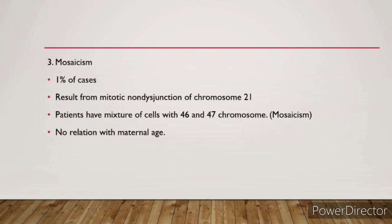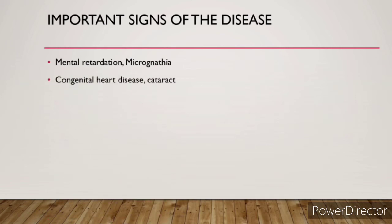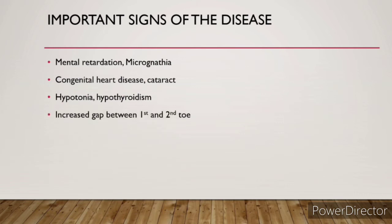Now the important signs of Down syndrome, which are frequently asked in exams. First is mental retardation and micrognathia — a small jaw. Pay close attention to signs related to dental issues, congenital heart diseases, and cataract. Hypotonia, meaning weak muscle tone, and hypothyroidism are also seen, along with increased gap between the first and second toe, also called the saddle toe.